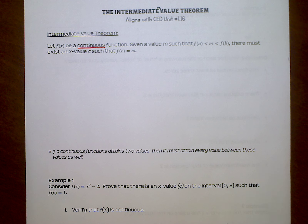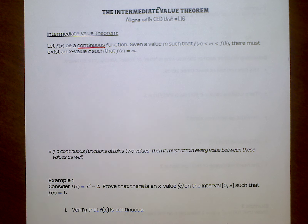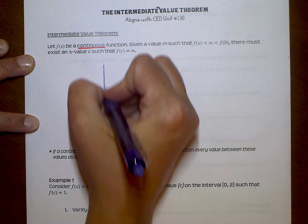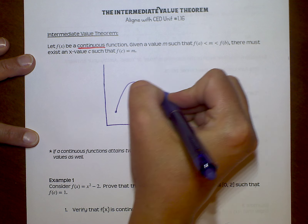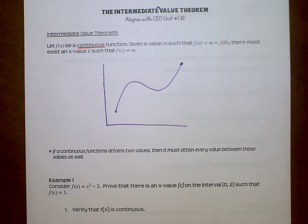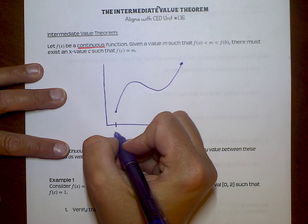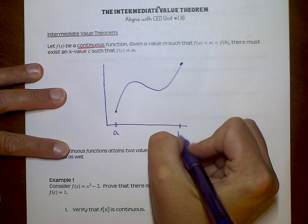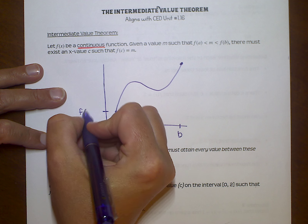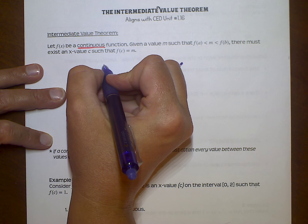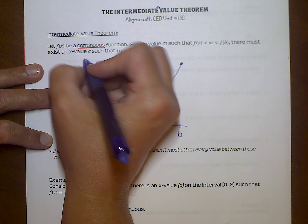Whenever you're going to use or apply this theorem, remember we talked about having to state the conditions. This is one of the conditions. You always have to be very clear that you're working with a continuous function, so you're allowed to use this theorem. So let's say I have a function that does something like this. We're going to call this endpoint A and this endpoint B. That means the Y value at A is F of A, and the Y value at the top is F of B.